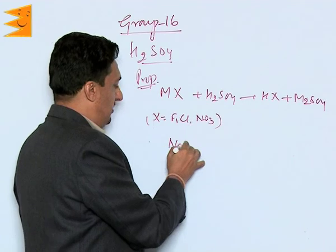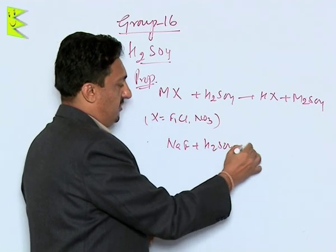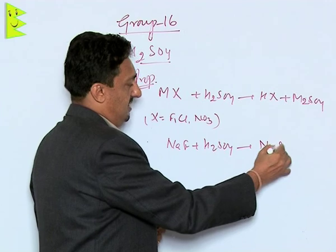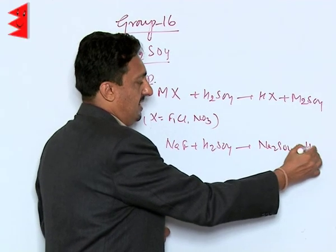Like if we have sodium fluoride in H₂SO₄, we can easily get Na₂SO₄ and we get HF.